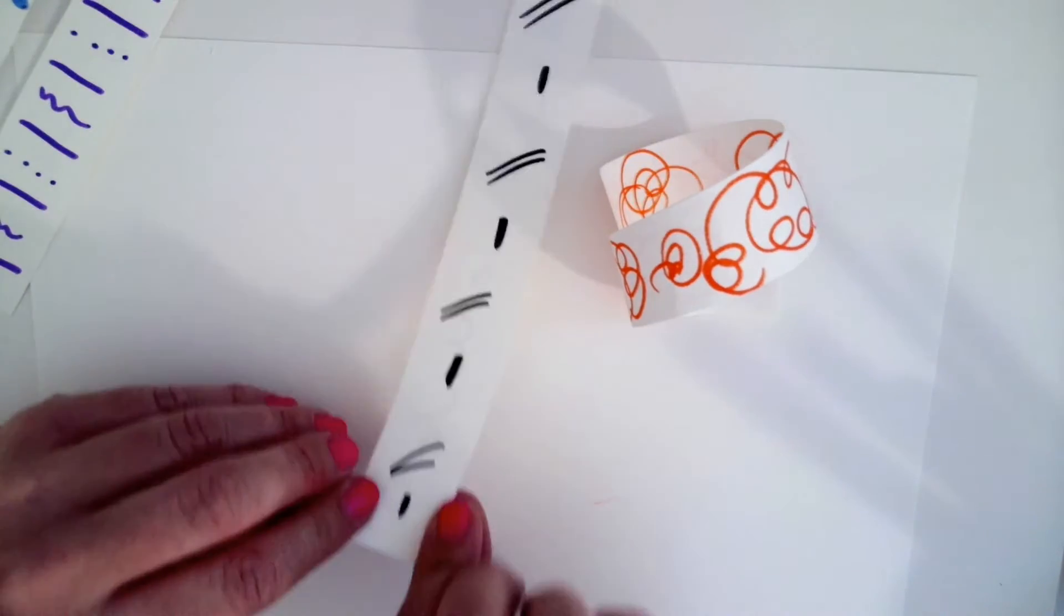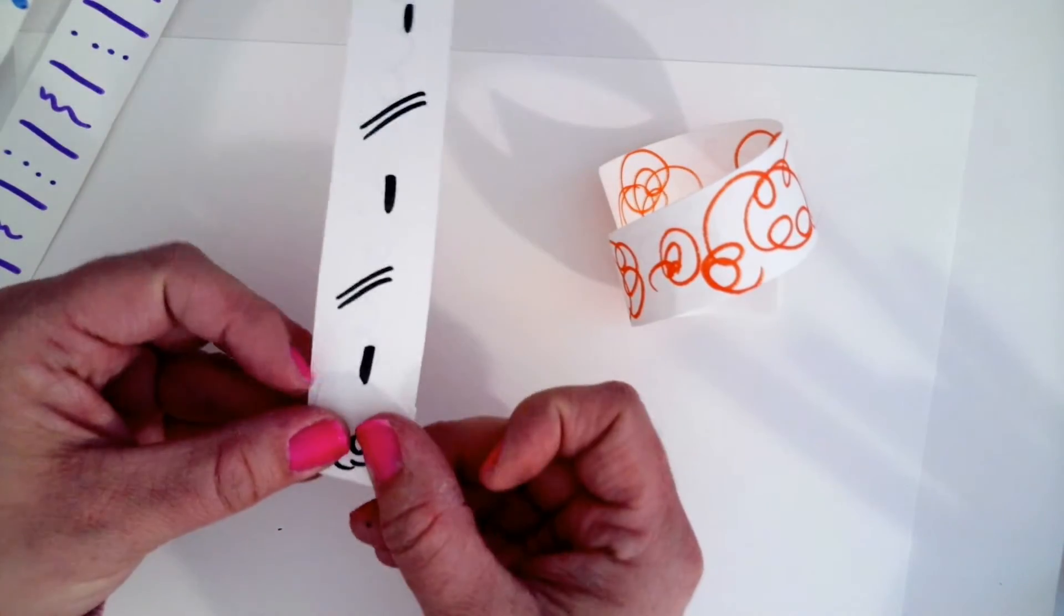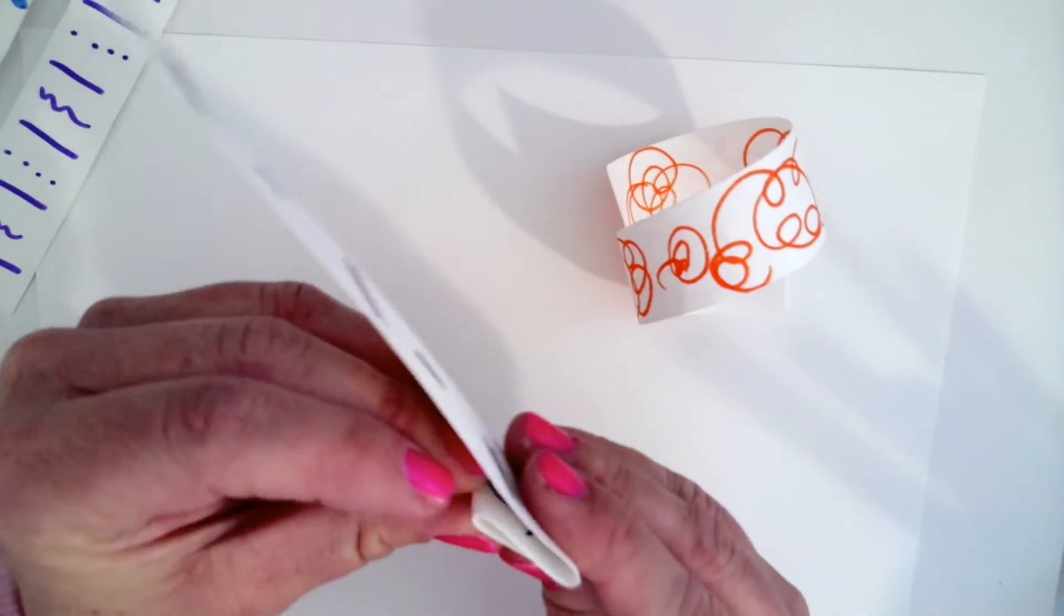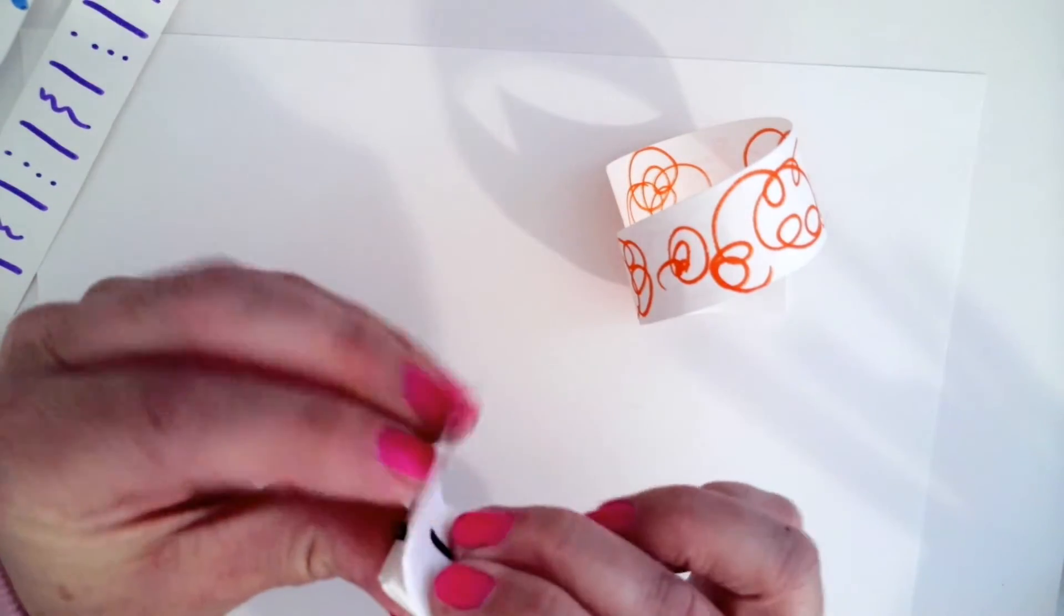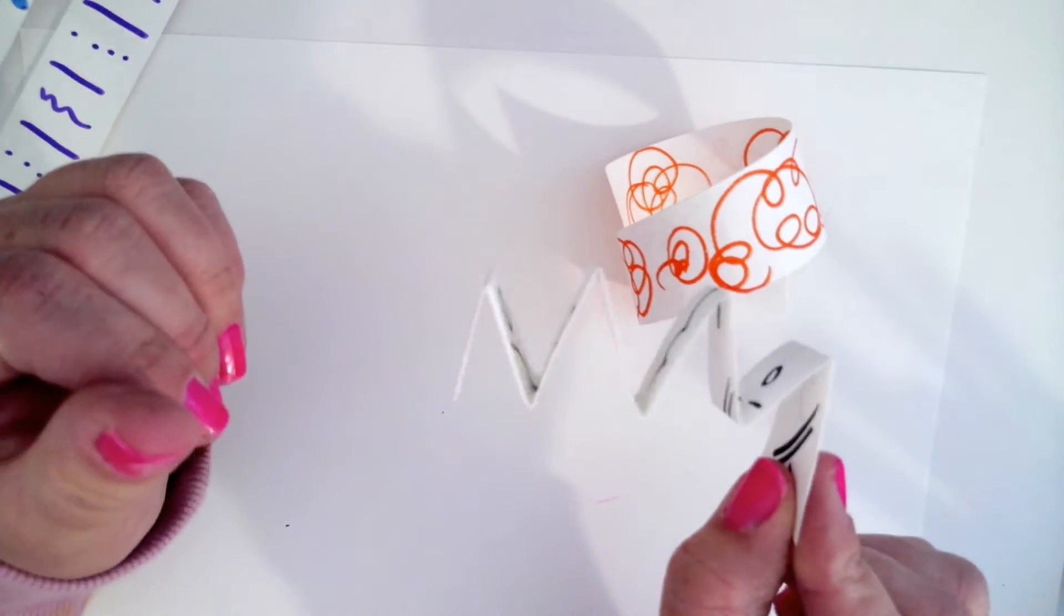This time, I'm going to fold my paper back and forth. So forward, backwards. I'll show you like this. Forward, backwards. And when this one opens up, it's like a zigzag.